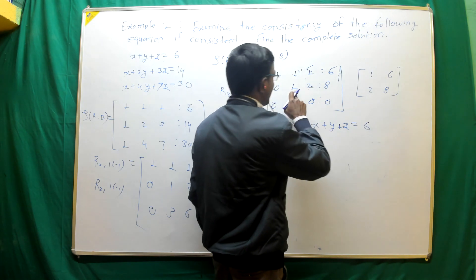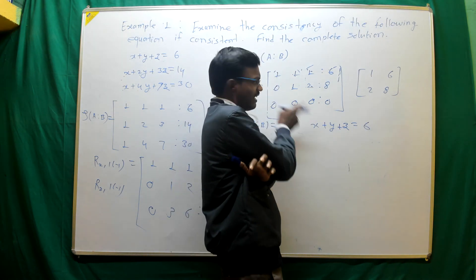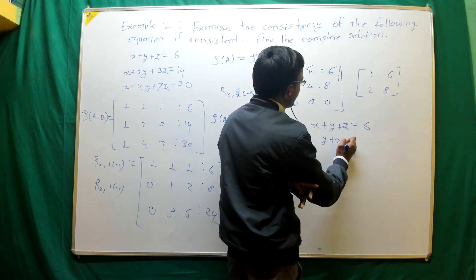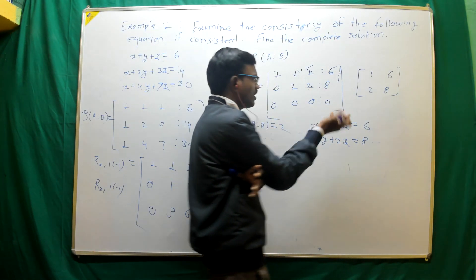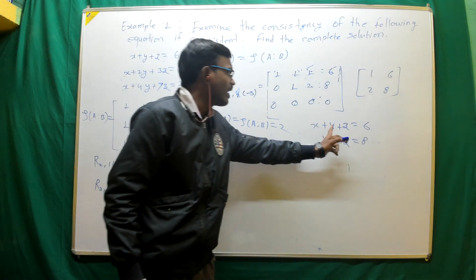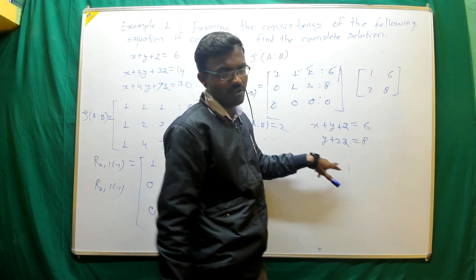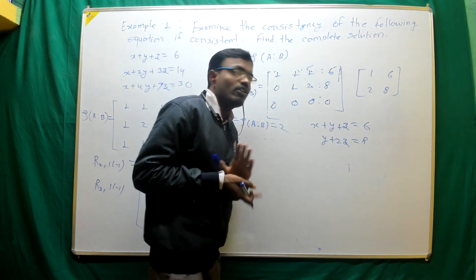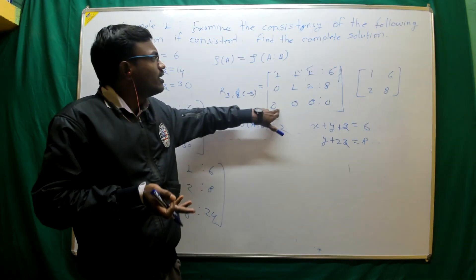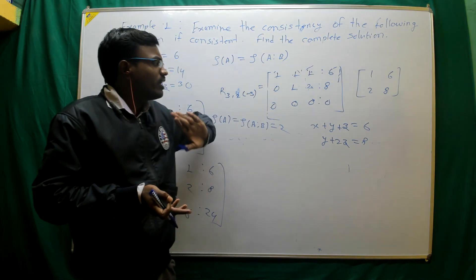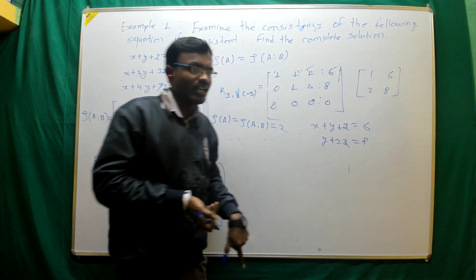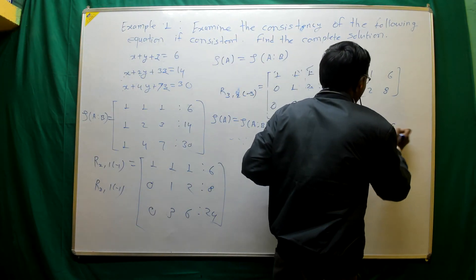After row reduction, the coefficient of x in the second equation becomes 0, so we don't write x in the second equation. The second equation becomes y plus 2z equal to 8. The third row is already 0, so we don't write a third equation. We are left with only two equations: x plus y plus z equal to 6, and y plus 2z equal to 8. By using these two equations we can find x, y, and z.